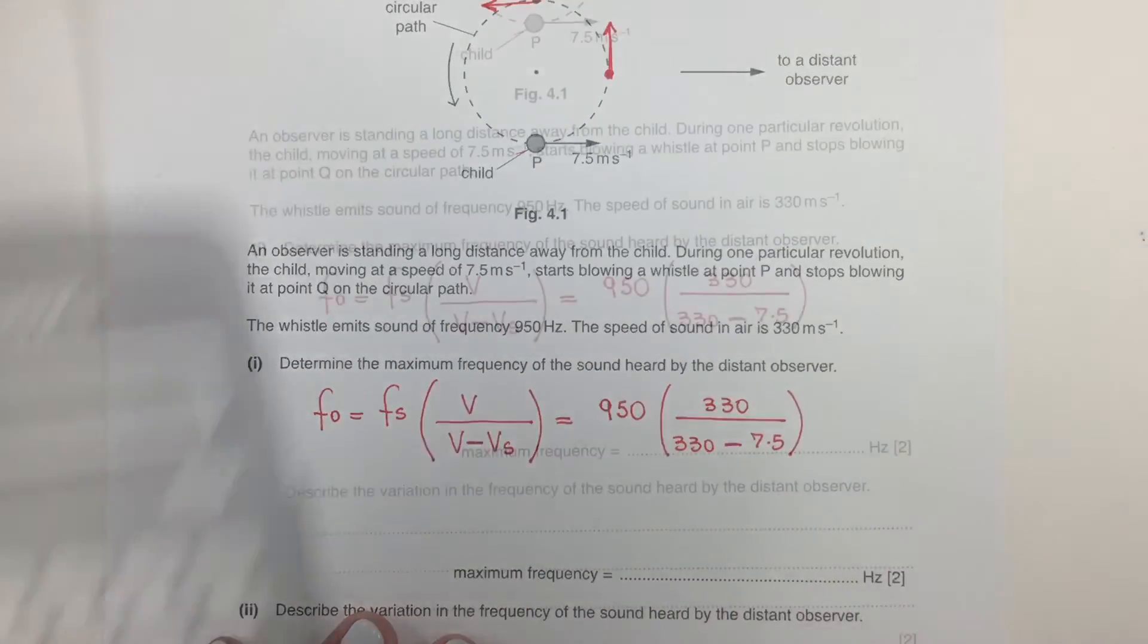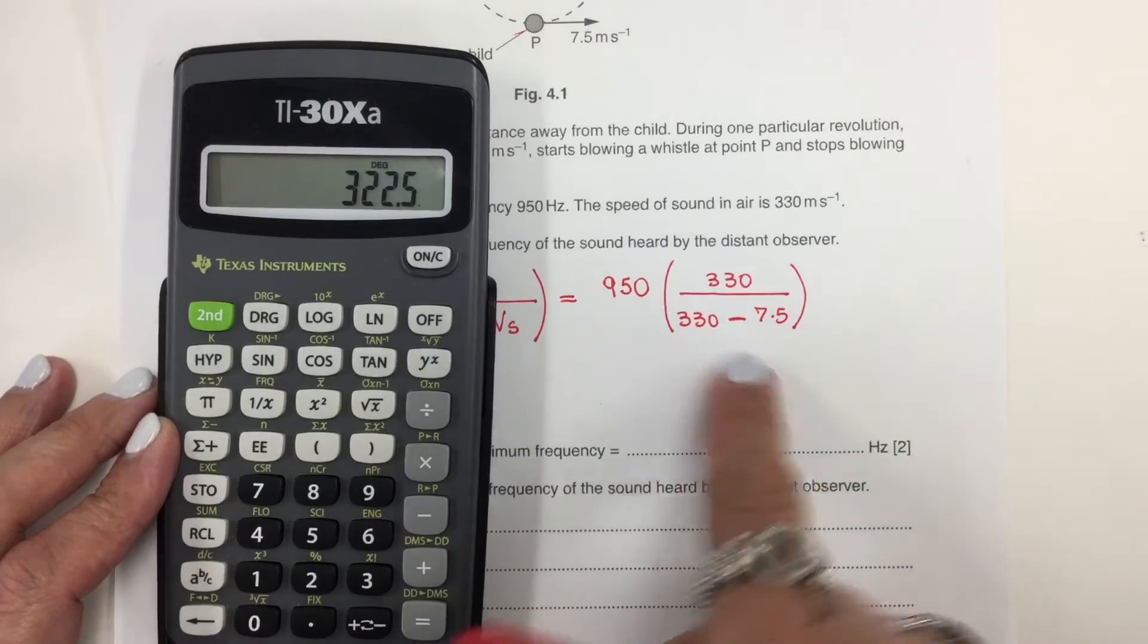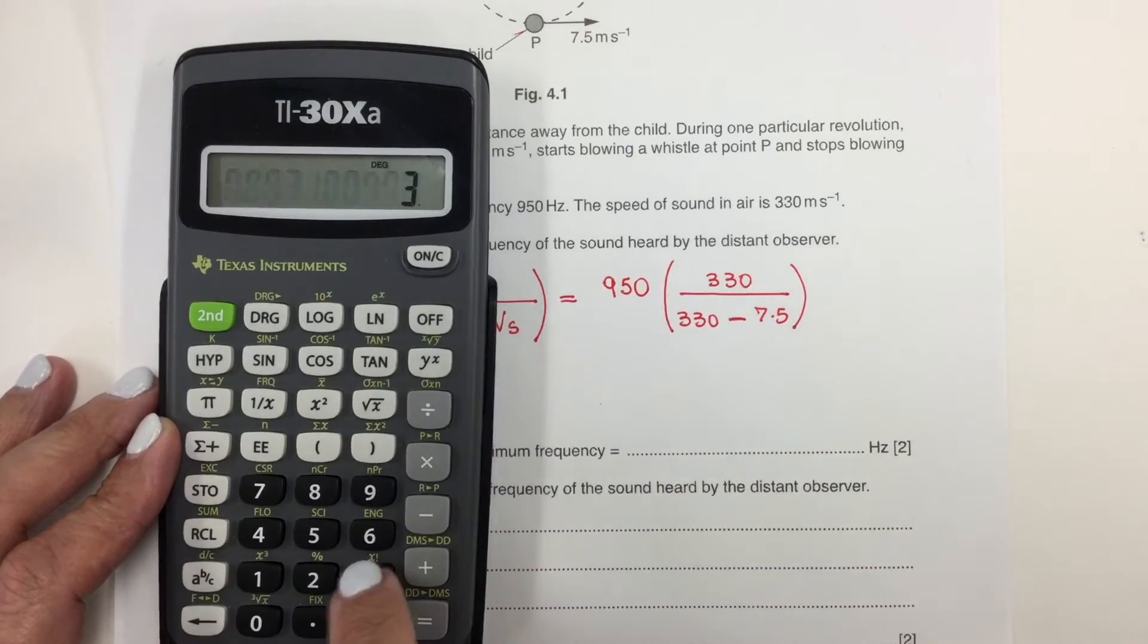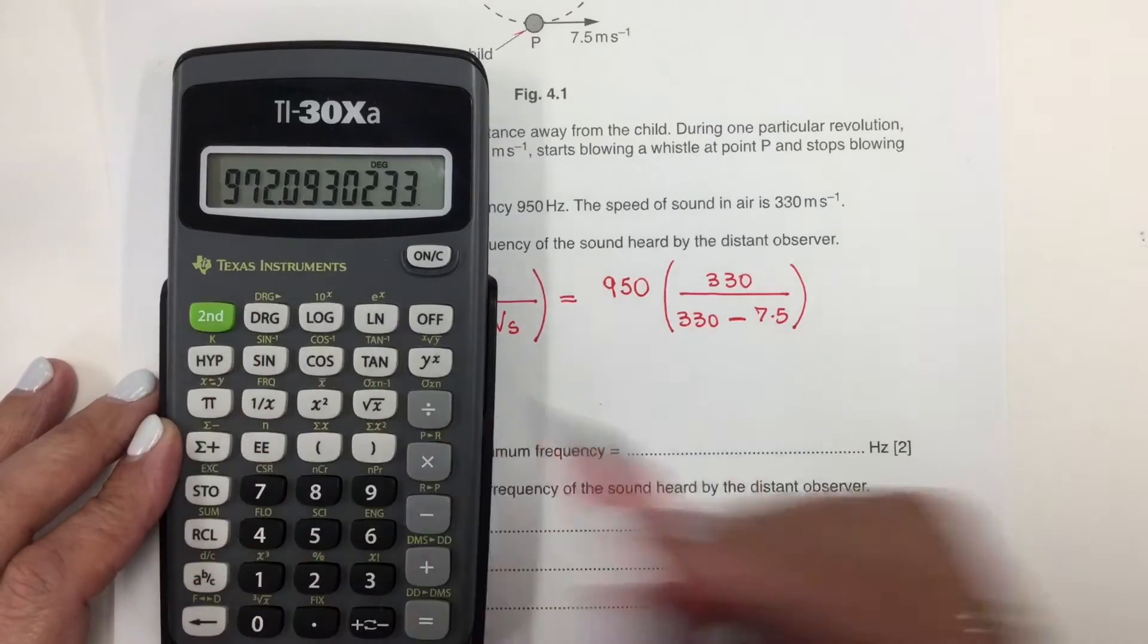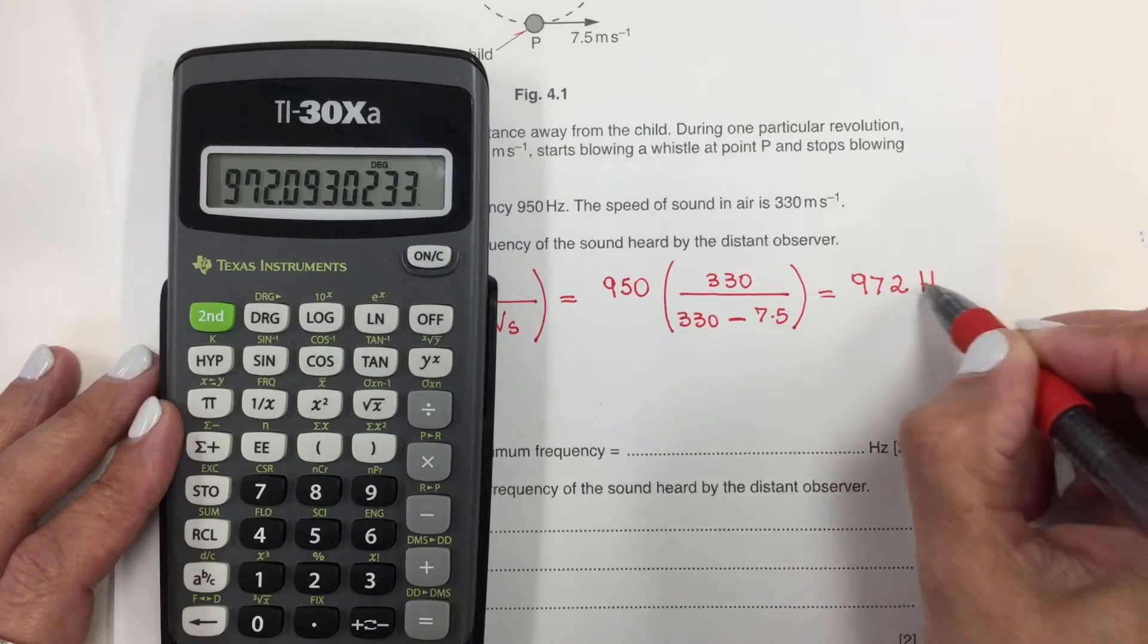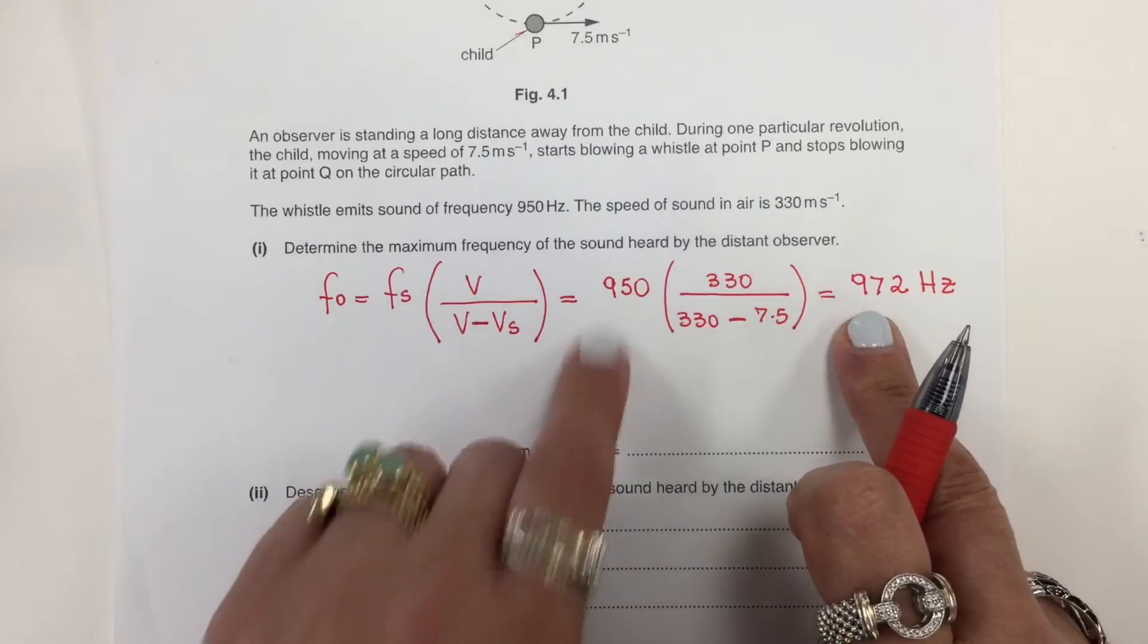So to solve this is 330 minus 7.5. I'm going to do inverse here times 330, and the result of this times 950. So here we have 972 hertz, which is higher than 950.